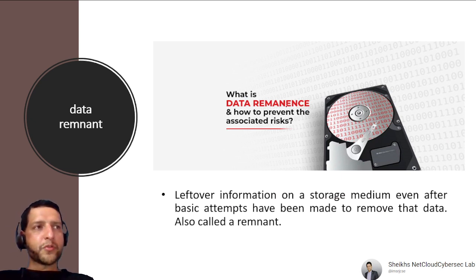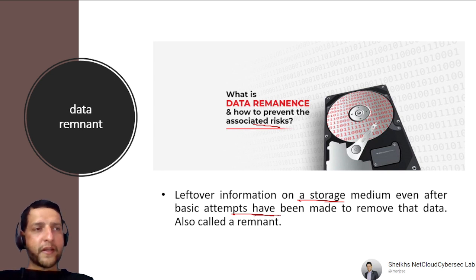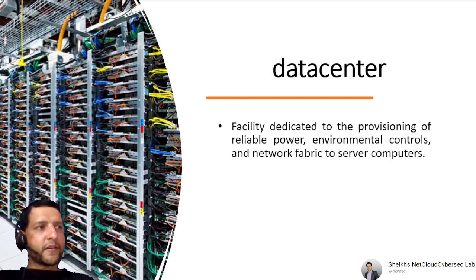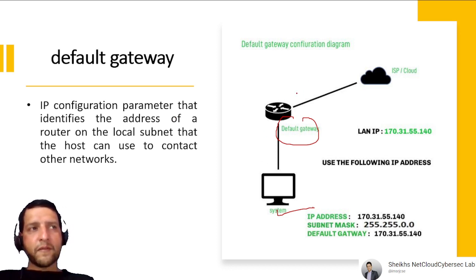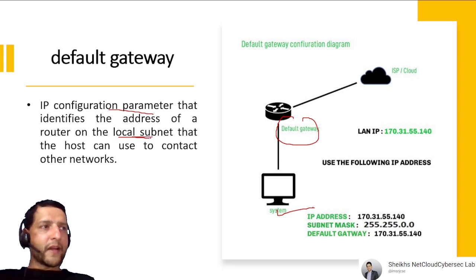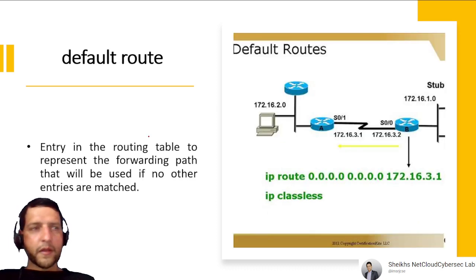Data Remanence is the leftover information on a storage medium even after basic attempts have been made to remove data. A Data Center is a facility dedicated to provisioning reliable power, environmental controls, and network fabric for computers. Default Gateway is typically your router — the IP configuration parameter identifying the address of a router on the local subnet, used to contact other networks.